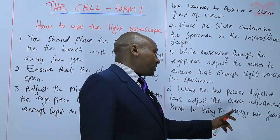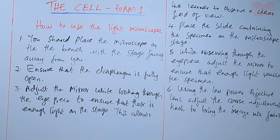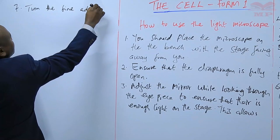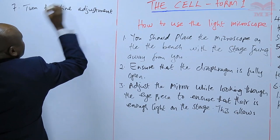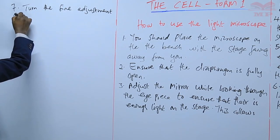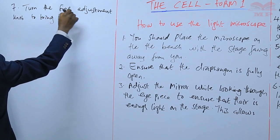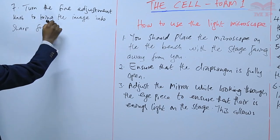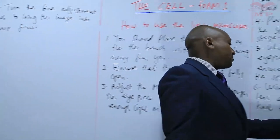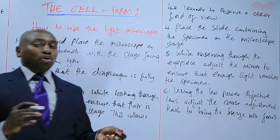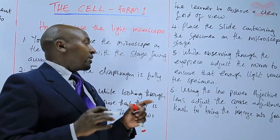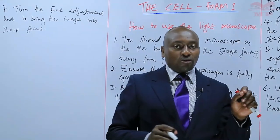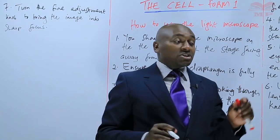Number seven: turn the fine adjustment knob to bring the image into sharp focus. The coarse adjustment knob is to bring the image into focus so that you can be able to view the image. Now, to make the details clearer and the focus sharp, you use the fine adjustment knob, because it moves the body tube over very small distances to make sure that the image is very clear.